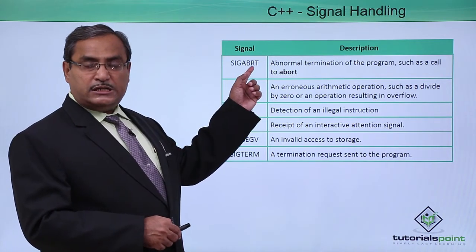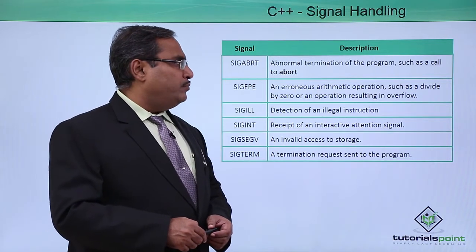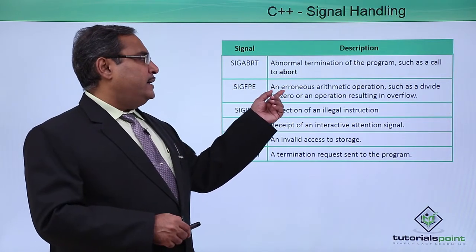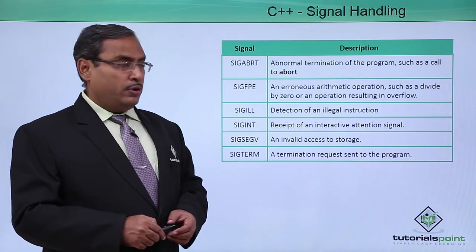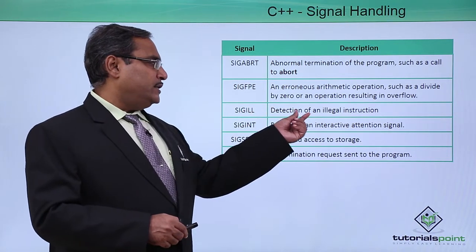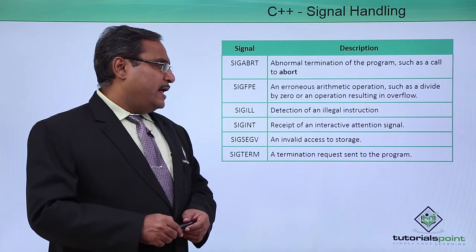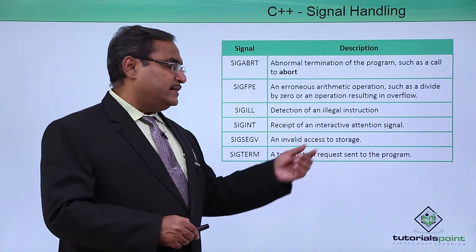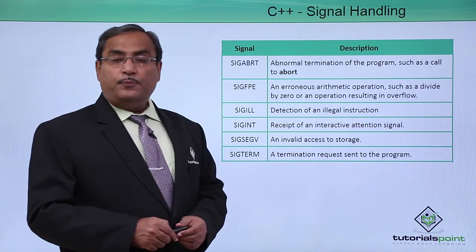SIGABRT — abnormal termination of the program, such as a call to abort. SIGFPE — an erroneous arithmetic operation such as divide by zero or an operation resulting in overflow, something like a floating point error. SIGILL — detection of an illegal instruction. SIGINT — receipt of an interactive attention signal. SIGSEGV — an invalid access to storage. SIGTERM — a termination request sent to the program.